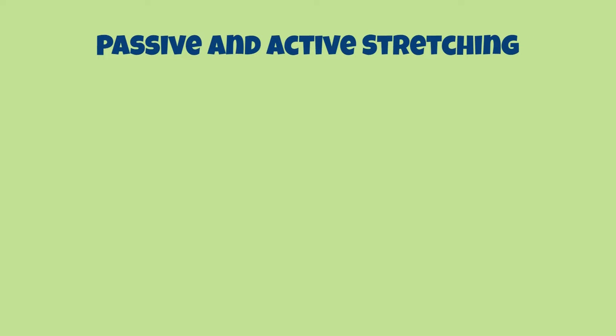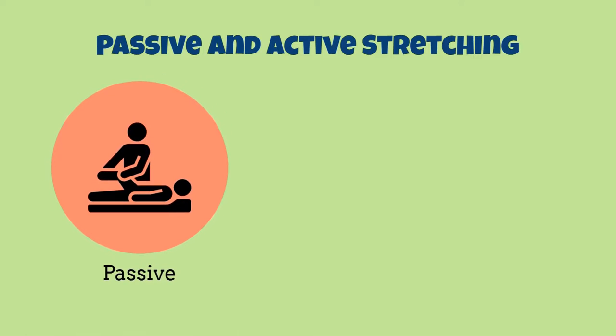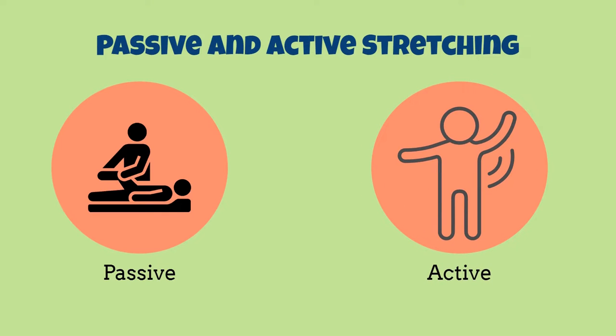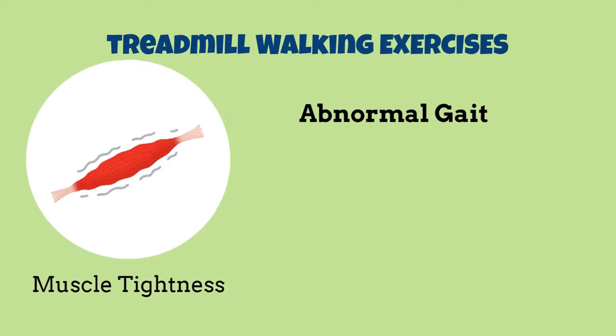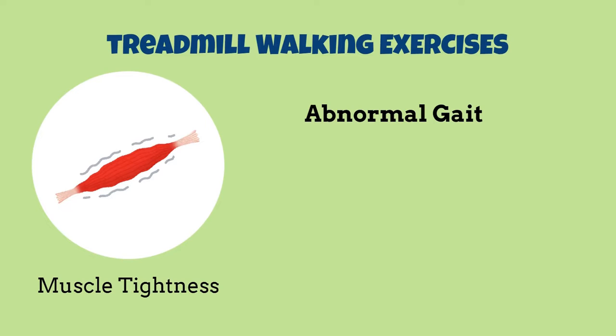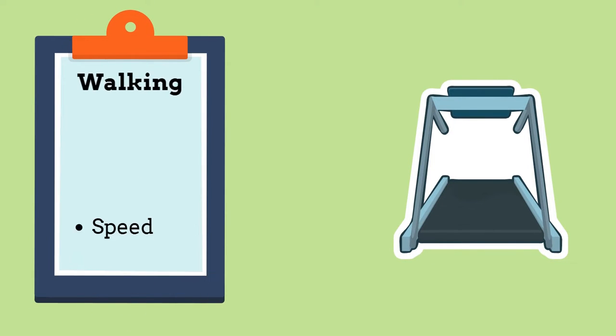Some popular approaches include passive and active stretching, which can help improve mobility and flexibility. Passive stretching involves using an external force and assistance to stretch tight muscles, whereas active stretching involves stretching that is initiated and maintained by the patient. Treadmill walking exercises can also be used to improve walking function and gait, which is a person's manner of walking. Individuals with cerebral palsy may walk with an abnormal gait due to muscle tightness, and improving an abnormal gait pattern is essential, as poor form can drastically restrict a person's movement and lead to chronic pain. The patient can practice walking on a treadmill with the support of a harness if needed, helping improve walking speed, endurance, and form.